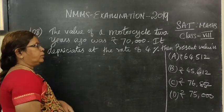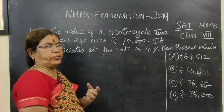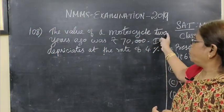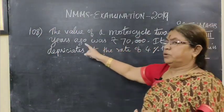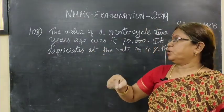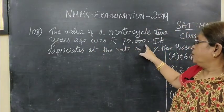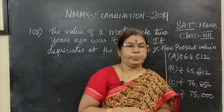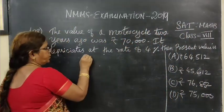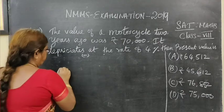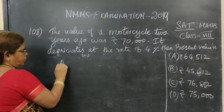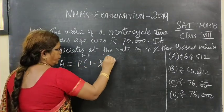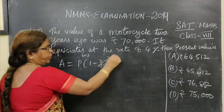Question number 108. You are given the value of a motorcycle two years ago. Two years ago the value of the motorcycle is 70,000. It will depreciate at the rate of — the formula is A equal to P bracket 1 minus R by 100 whole power N.